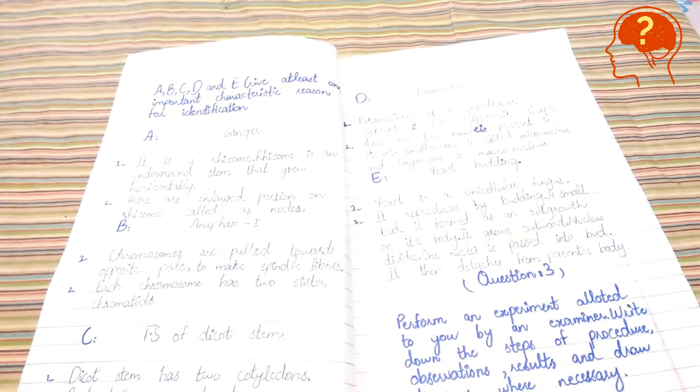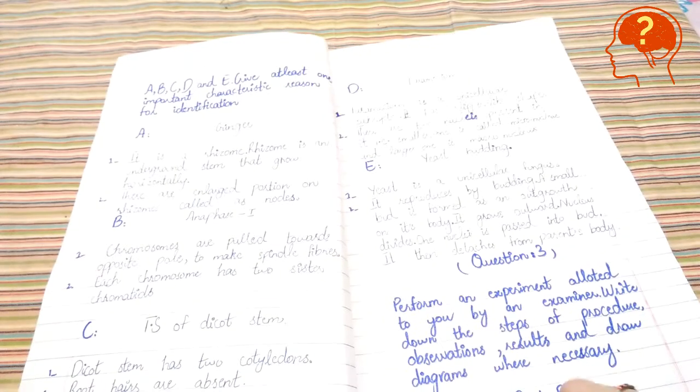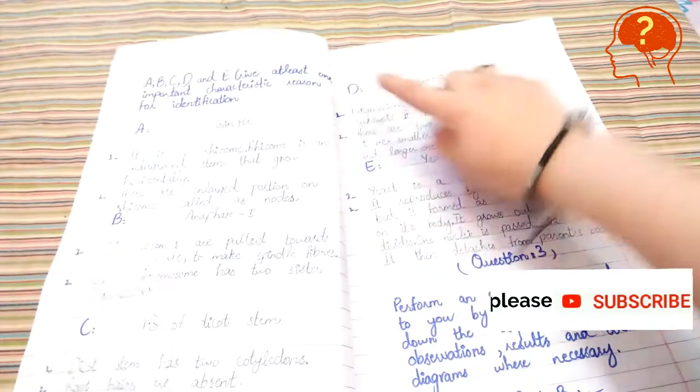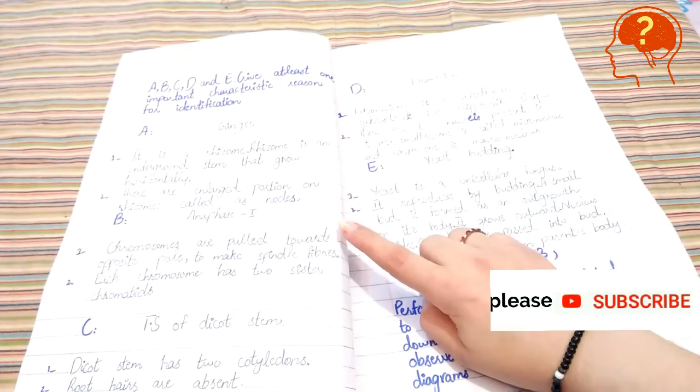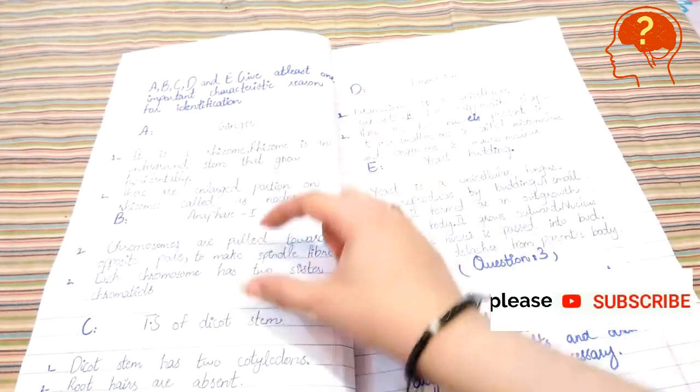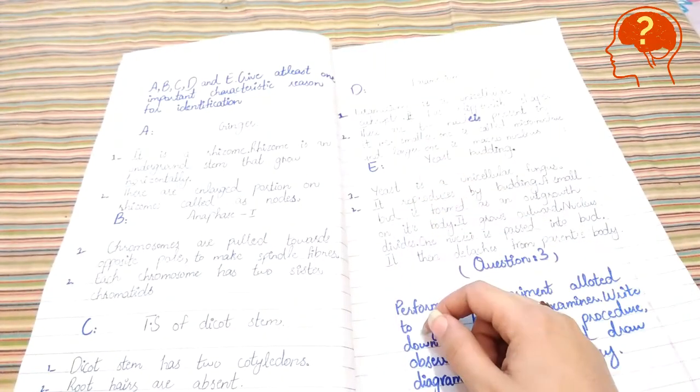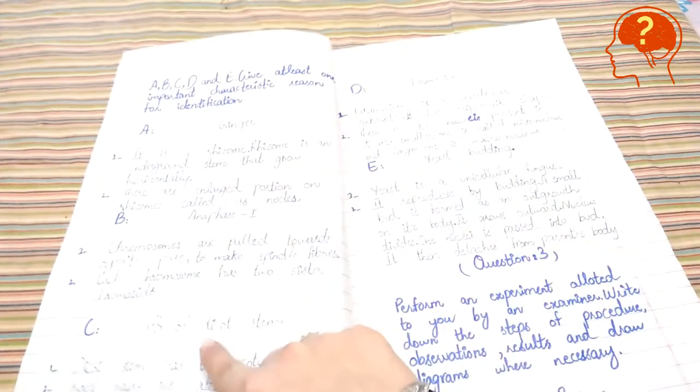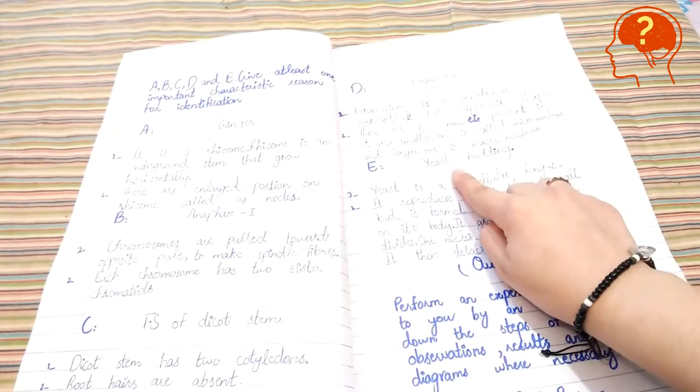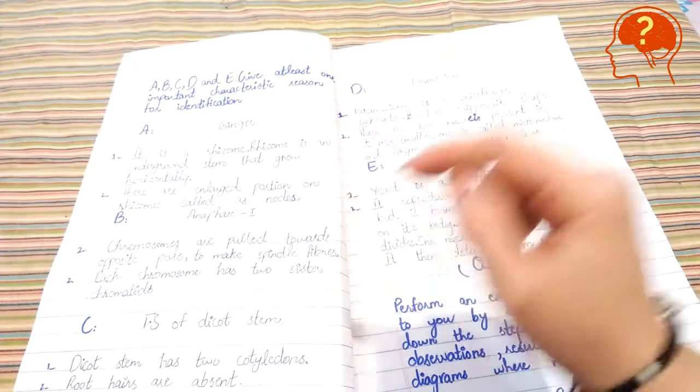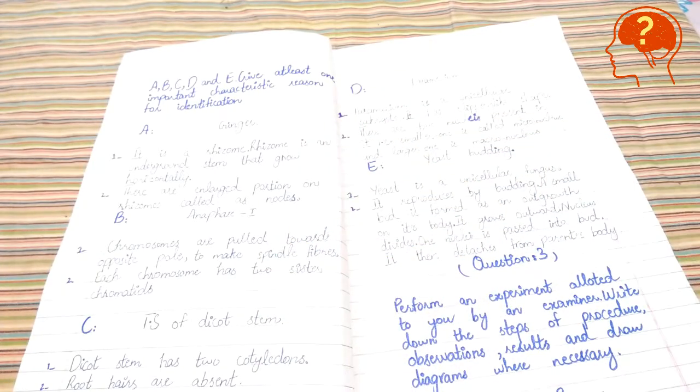What you do is write down A, B, C, D, and E on your paper and leave four to five lines between them. Then you would go for identification and write down the names of slides and specimens as he has written here. Then you would come back to your seat and write down one or two characteristic features of each.